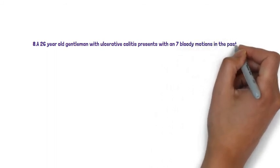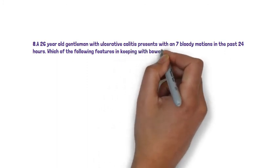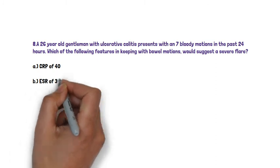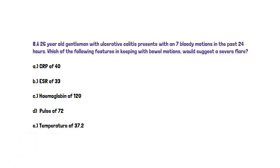Question 8. A 26-year-old gentleman with ulcerative colitis presents with 7 bloody motions in the past 24 hours. Which of the following features would also suggest a severe flare? Options: A. CRP of 40, B. ESR of 33, C. Haemoglobin of 120, D. Pulse of 72, E. Temperature of 37.2.